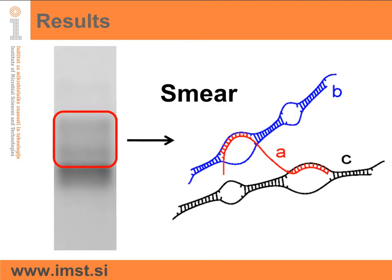We revealed that DNA in the smear fraction contains less base pairing than in the band fraction, and that the data points to the formation of multi-strand pairing DNA structures, such as shown in the picture. So, up until now, we have shown that the smear is just a structural fraction of the correct size PCR product.